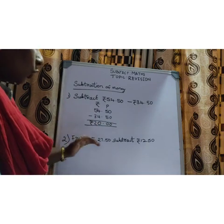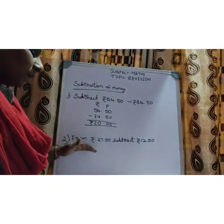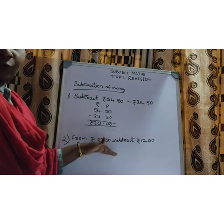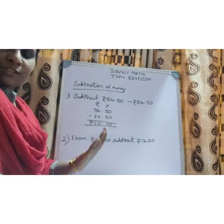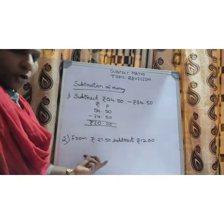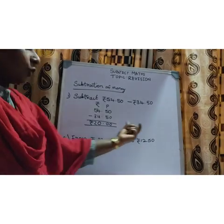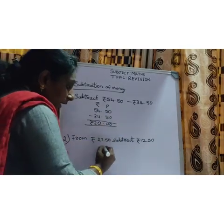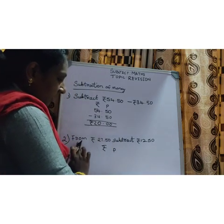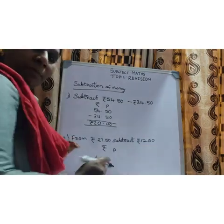The next is: from rupees 27 and 50 paise, subtract 12 rupees and 50 paise. This can also be asked as: subtract 12 rupees and 50 paise from 27 rupees and 50 paise. Both meanings are the same. The 'from' number should always come first — the big number should always come on top.